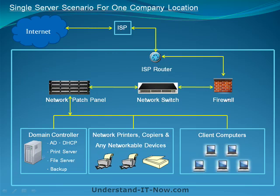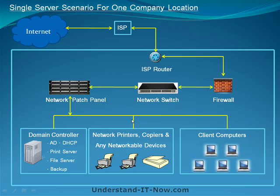The firewall will be configured with your default gateway and the main IP address from your ISP. You plug your firewall into your network switch, your network switch connects to your patch panel, and your patch panel will connect to all servers, client computers, and any networkable devices.